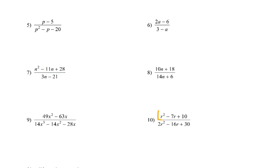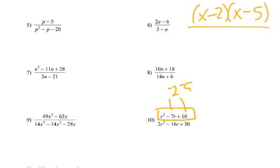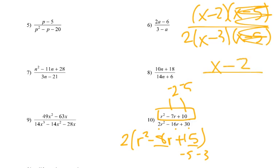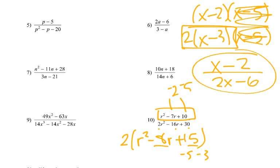Number 10: on the top, factors of 7 that would equal negative 4 — negative 2 and negative 5. So I'd get x minus 2 times x minus 5. On the bottom, I can pull out a 2 first and get 2 times r squared minus 8r plus 15. Factors of 15 that would equal negative 8 are negative 5 and negative 3. So I'd have x minus 3 times 2 times x minus 5. We eliminate the x minus 5's and we're left with x minus 2 over 2 times x minus 3.